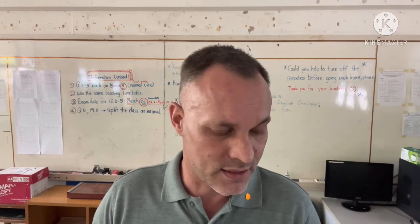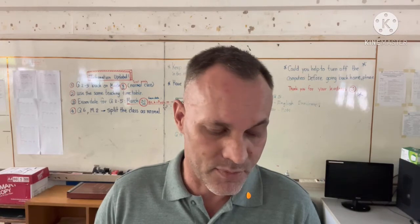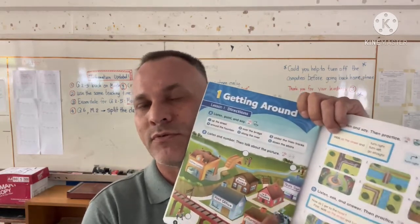So in this lesson we did Getting Around — directions. We did our six vocabulary words: up the street, over the bridge, under the train tracks, around the fountain, along the river, down the stairs. Then we matched them with pictures. Then we did the basic sentence and new vocabulary: turn right, turn left, go straight. Then at the last section we did the question 'How do I get to...?' — like 'how do I get to the hotel?' — and we put all our vocabulary in the directions.